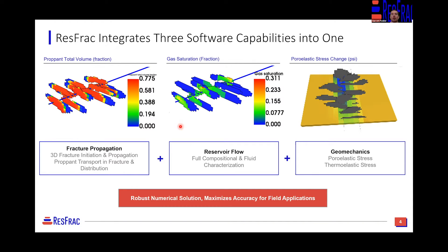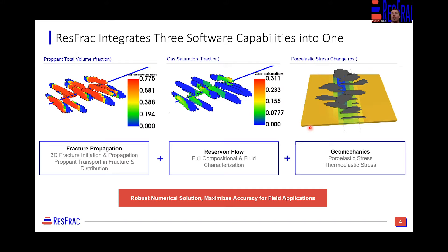Then we need to know how much oil or gas we're going to produce as a result. The simulator will do a full three-dimensional calculation of how the matrix fluids flow into those cracks in the rock and eventually into the wellbore up to the surface. A final component integrated into the ResFrac solution is the poroelastic and thermoelastic stress changes throughout the duration of production, as we deplete the rock and there is a corresponding stress change along and around those areas of depletion.